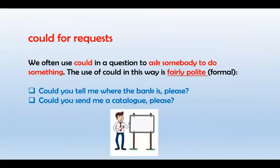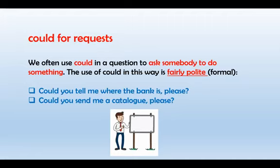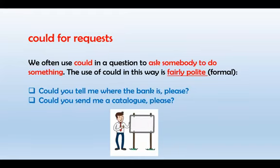También tenemos que el Could lo utilizamos para hacer peticiones o algún pedido — para pedir a alguien que realice una acción específica. Esta manera del Could es más formal, más educada que el Can. Por ejemplo: 'Could you tell me where the bank is, please?' — estoy pidiendo de manera educada dónde queda el banco. 'Could you send me a catalogue, please?' — estoy pidiendo que me envíe el catálogo. Entonces el Could para peticiones es mucho más formal, más polite, más educado que el uso del Can para peticiones.